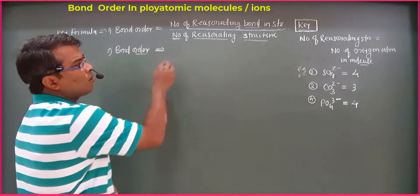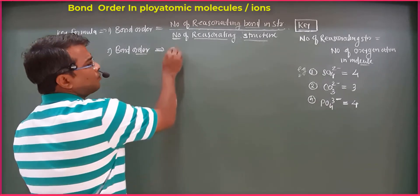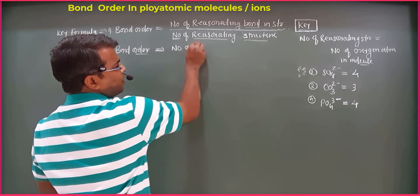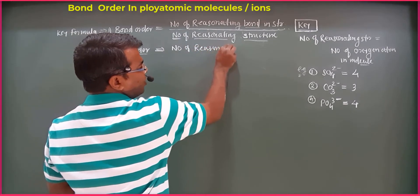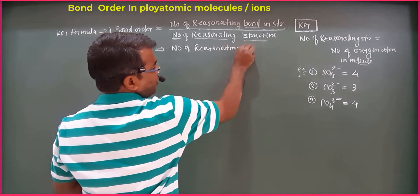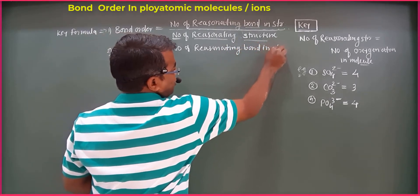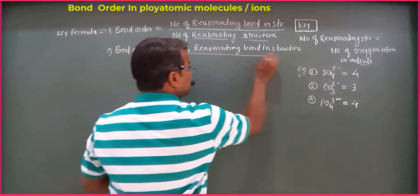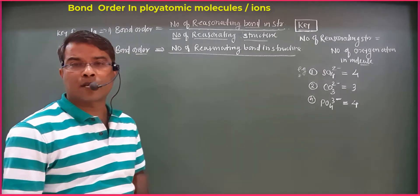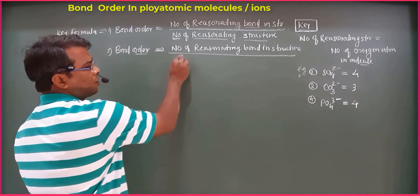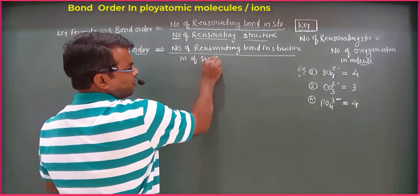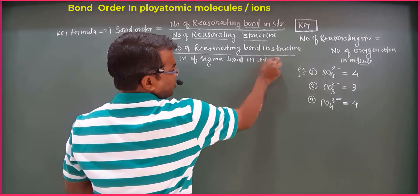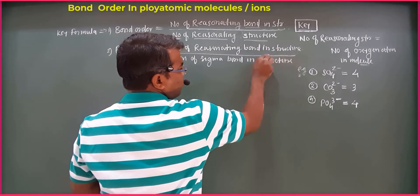The correct formula is: the number of resonating bonds in the structure divided by the number of sigma bonds in the structure. The number of sigma bonds in the structure is the number of single bonds.